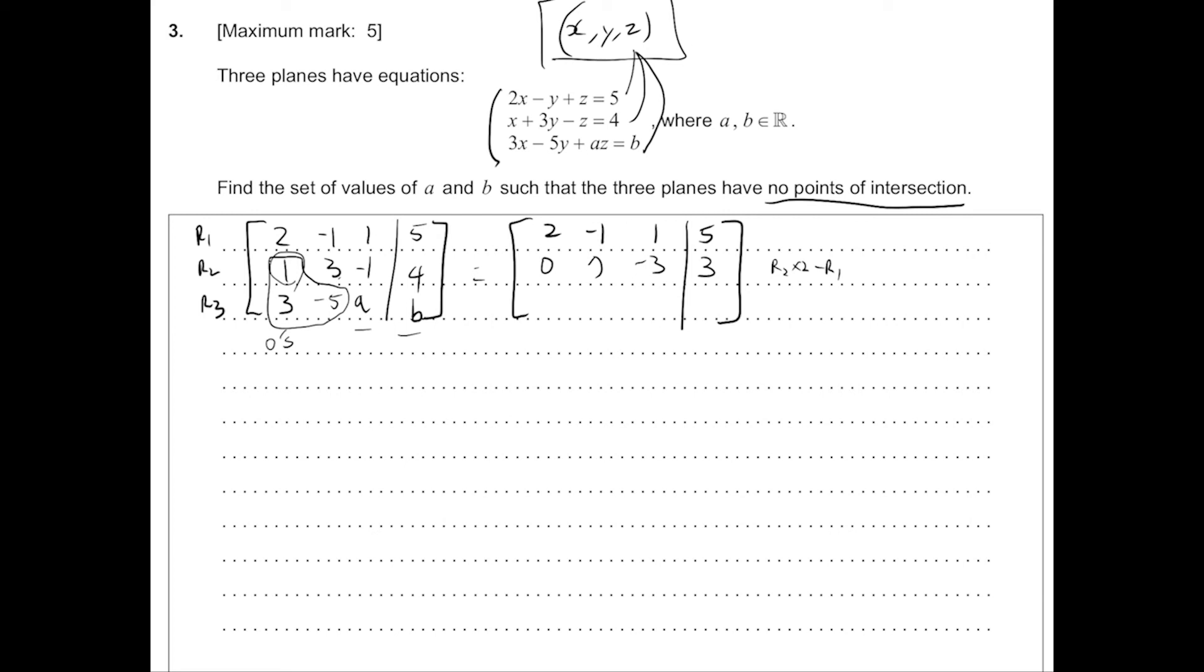For this one, we can try to have something like r3 minus 3 times r2. So 3 minus 3 times 1, that's 0. Minus 5, minus 3 times 3, that's a negative 14.